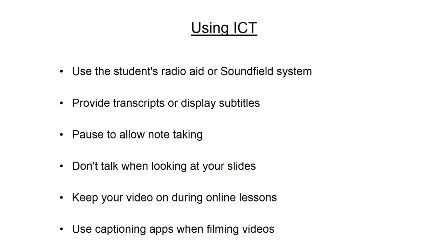Most lessons include some form of ICT to help deliver the session through an interactive whiteboard and slides or using video clips, podcasts and sound clips to reinforce teaching points. You will need to consider how a student with a hearing loss can access these. If they have a radio aid, this can be connected through an audio cable to the sound source, which will enable the sound to be delivered directly to the student's hearing aids. You could provide a transcript prior to playing the video that the student can read, or display the subtitles, although it is a good idea to check the accuracy of the subtitles beforehand. If notes need to be made during the clip, you may need to pause at points to allow this, as listening and writing notes at the same time will be difficult.